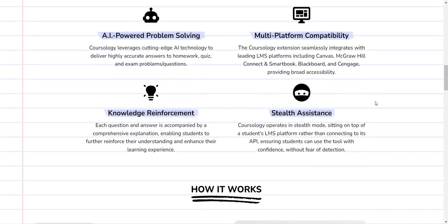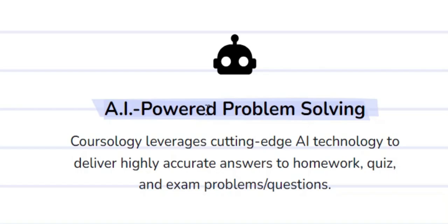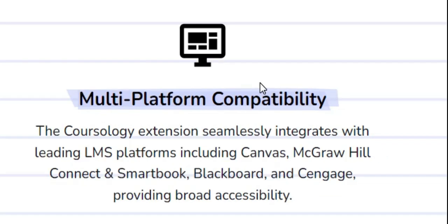In terms of the features of Corsology that I love, the fact that it is AI-powered problem-solving, which means the AI is very fast in finding you the most accurate answer to your questions. Then the multi-platform compatibility, this AI extension works on all learning management platforms, including Canvas and all other platforms that you use. If your platform doesn't work directly with it, you can use the text highlight feature that I mentioned earlier.